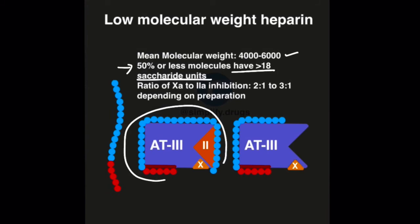Whereas the pentasaccharide sequence is present in all the molecules so that the factor 10 inhibition is complete. Now this translates to a ratio of 10A to 2A inhibition to double or more than double.